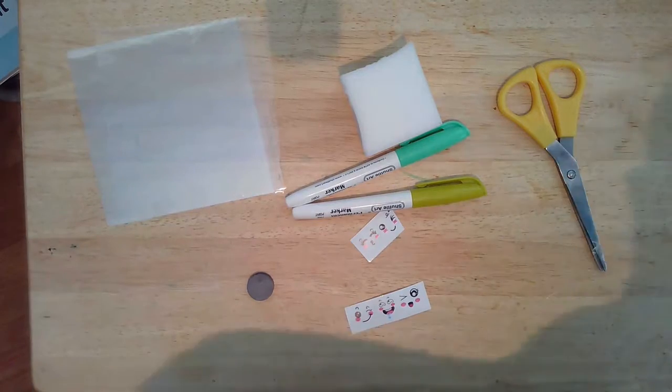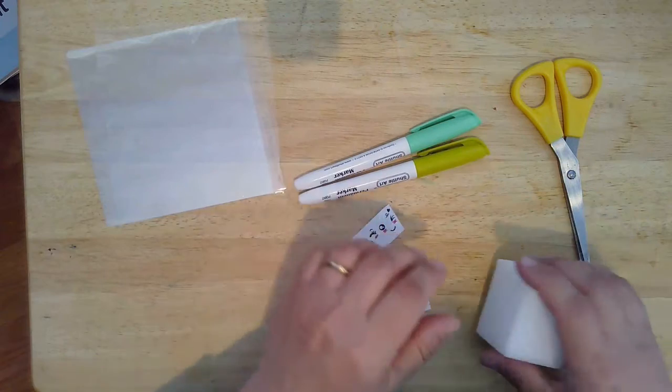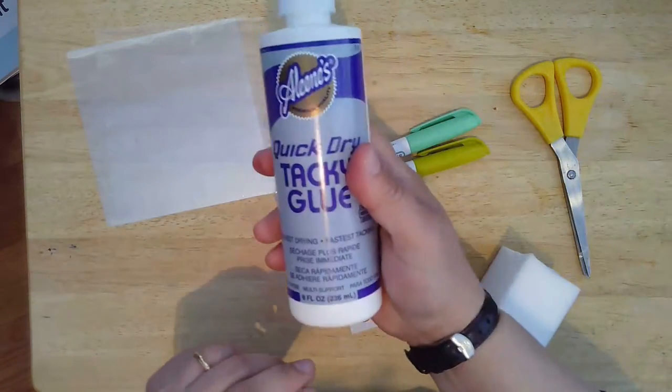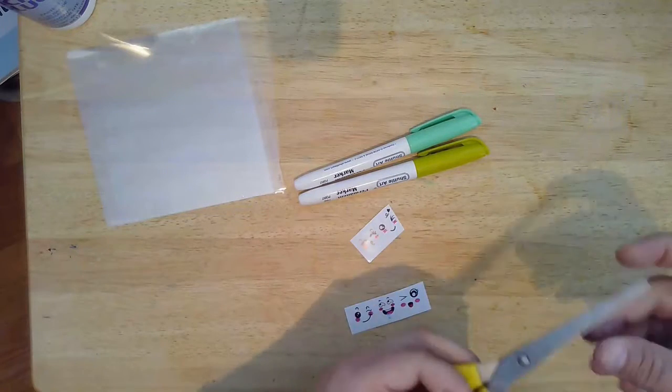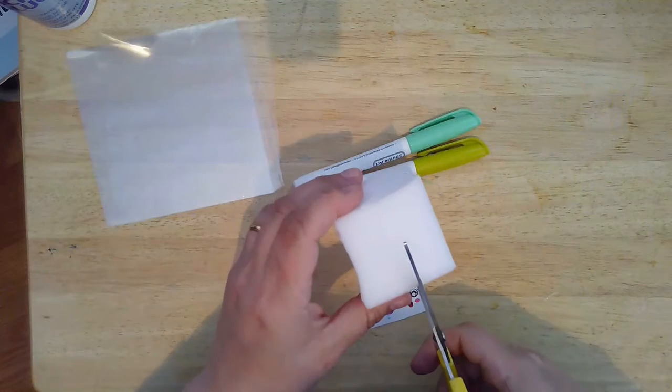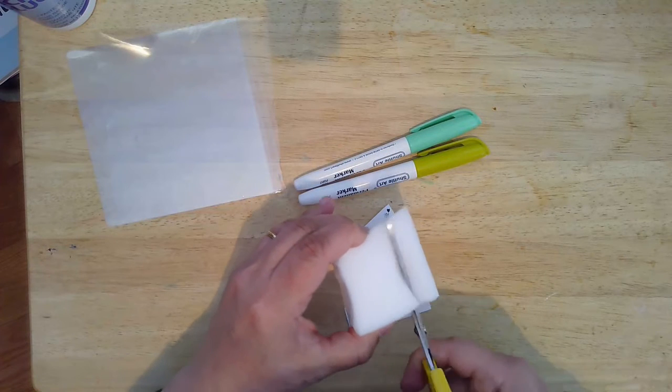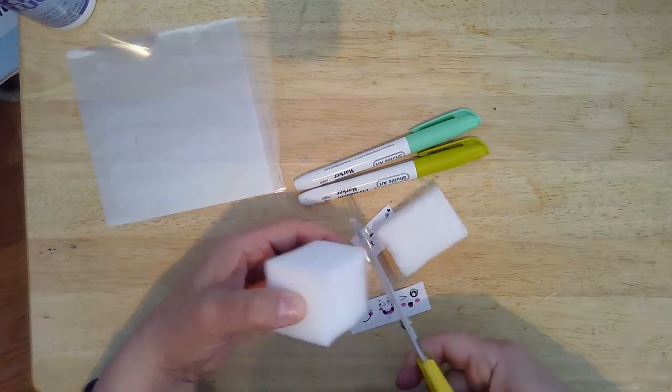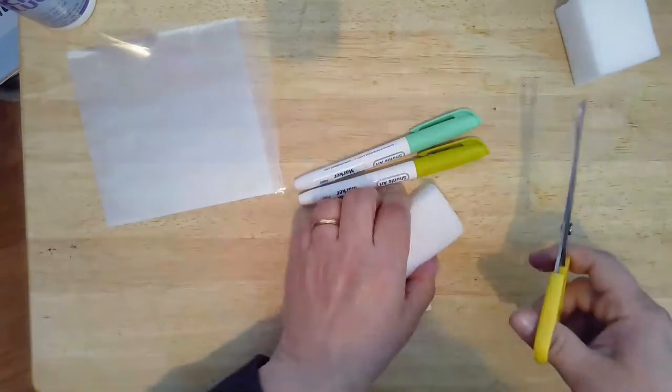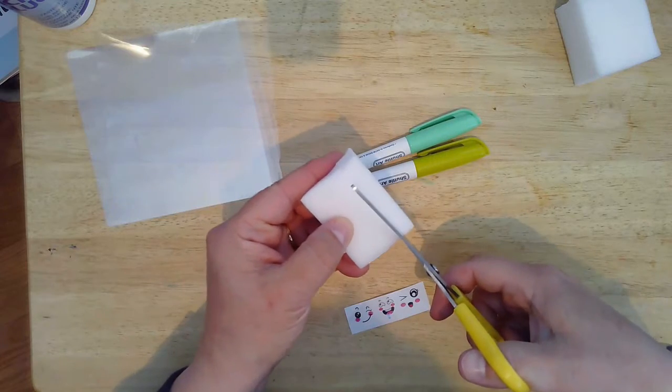All right, first up you're going to want to cut a piece of foam and shape it into a candy shape. So you should have enough foam to make probably three magnets. I'm going to cut off a square. And my first one that I made as a trial was round, so this one I'm going to make kind of a little square.